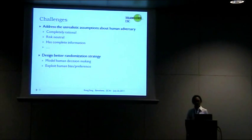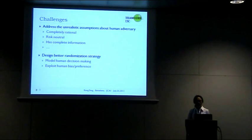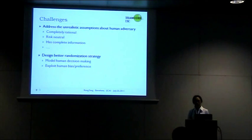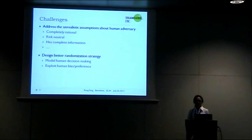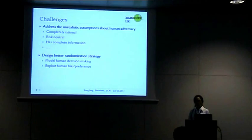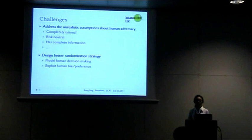As we expand the use of game theory to real-world security problems, one of the key challenges comes from the fact that we are facing real human players in the game. Traditional game theory makes assumptions such as players are completely rational, risk neutral, and have complete information of the game. But in a real-world security game, especially when humans are involved, those assumptions might not hold. The question is whether we can model human decision making more accurately and exploit biases in human decision making to improve the defender's resource allocation strategy.